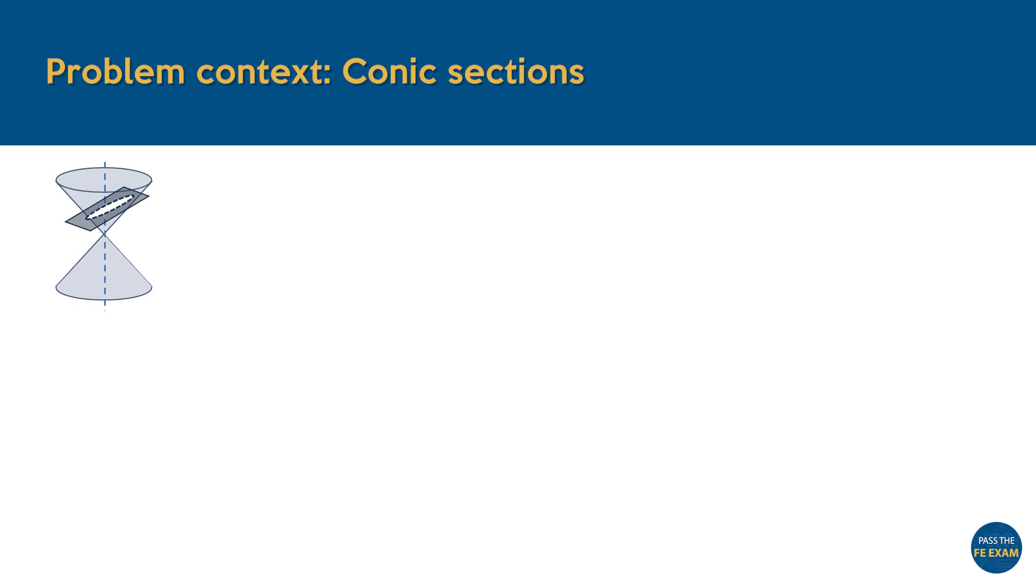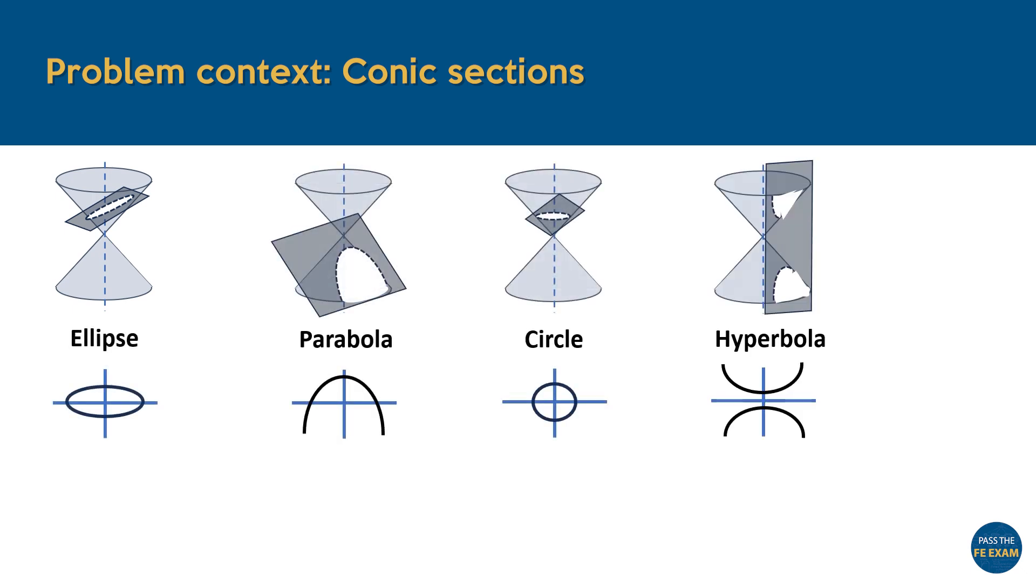The type of curve, whether it's an ellipse, parabola, circle, or hyperbola, depends on the angle at which the plane intersects the cone.